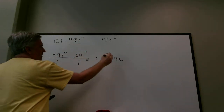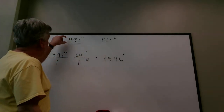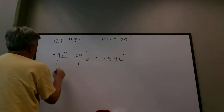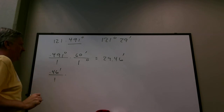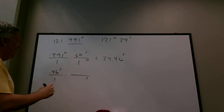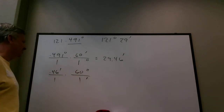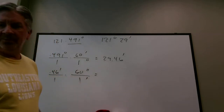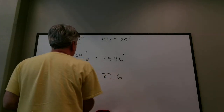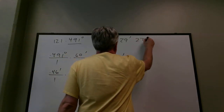The degrees cancel, leaving 29.46 minutes — a little less than 30, as expected. Pull off the 29 minutes and keep the 0.46 minutes. Now go from minutes to seconds: put minutes in the denominator, 60 seconds per minute. So 0.46 times 60 equals 27.6 seconds.